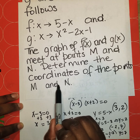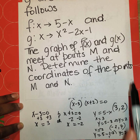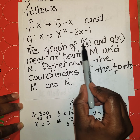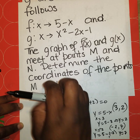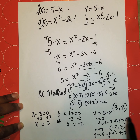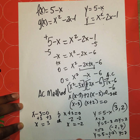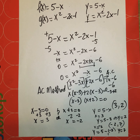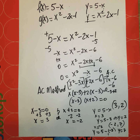These are the two coordinates where the graphs of f of x and g of x meet. The points M and N are (3, 2) and (negative 2, 7). I hope this video was useful. If you want to see a shorter version of working this question, let me know. See you on the next video — remember to like, share, comment, subscribe, and turn on your bell notifications.